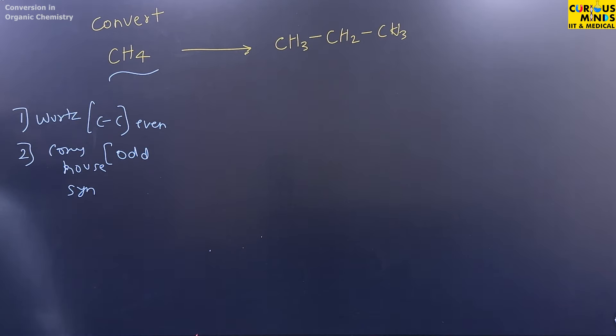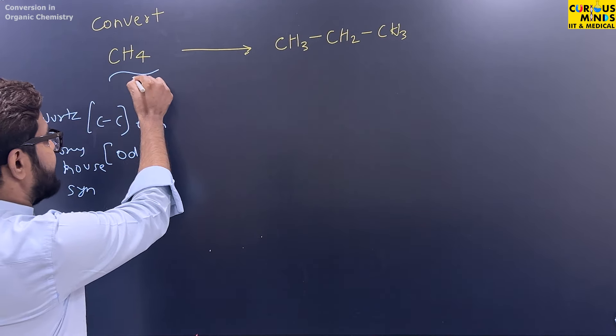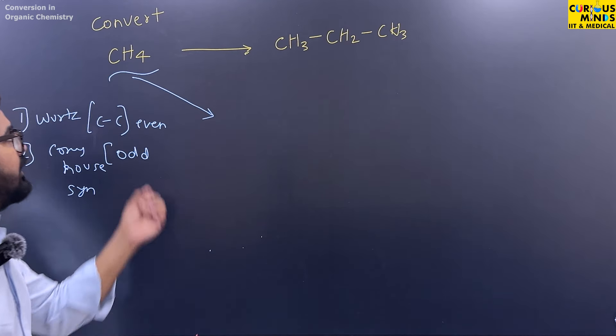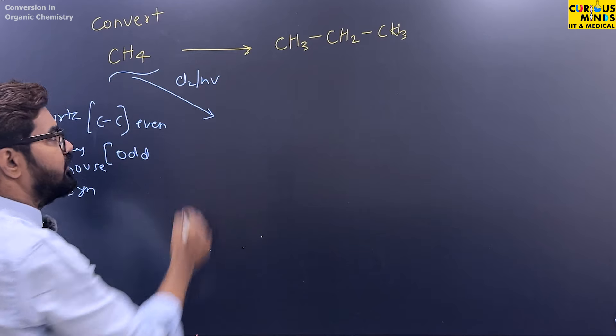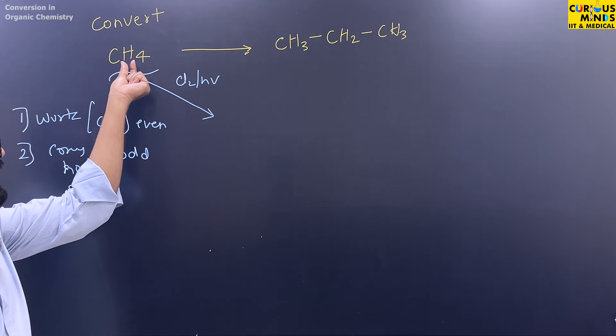So let's start with this. Now, first of all, methane, we add chlorine in presence of sunlight. What will happen? Chlorine will replace one hydrogen, which we call free radical substitution.